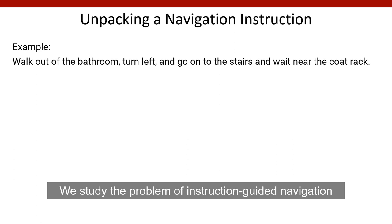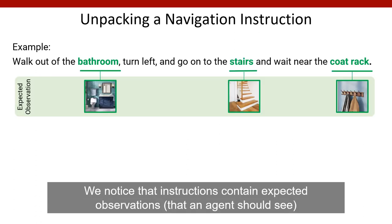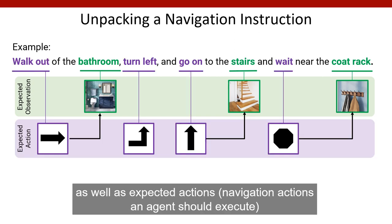In this work we study the problem of instruction guided navigation. Take this instruction for example: walk out of the bathroom, turn left and go onto the stairs and wait near the coat rack. We notice that instructions contain expected observations that an agent should see, such as the bathroom, the stairs and the coat rack, as well as expected actions such as walking out, turning left, going on and waiting.